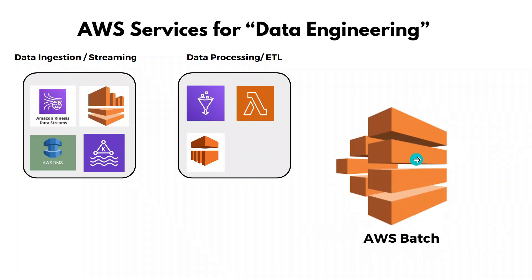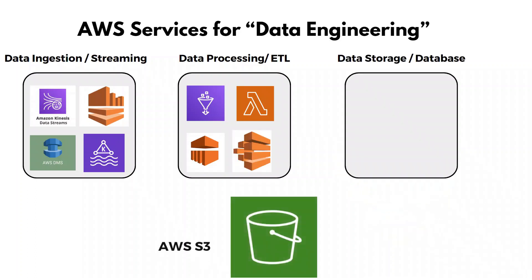The next service is AWS Batch, which lets you schedule, monitor, and orchestrate your workflows in AWS using services like EKS (Kubernetes) or other container services. This covers the batch processing aspect of data engineering.